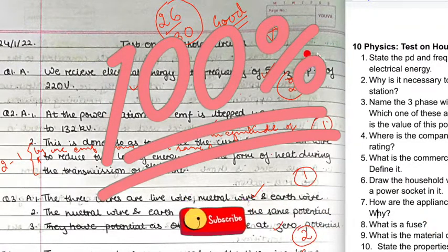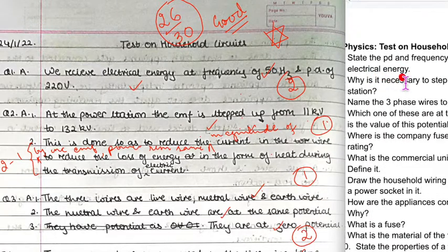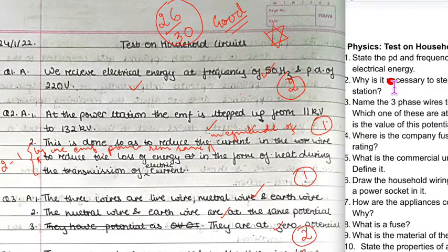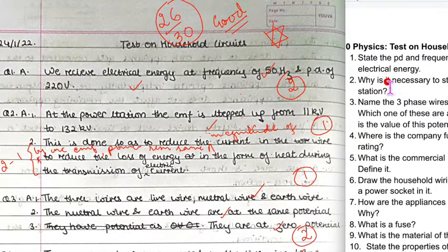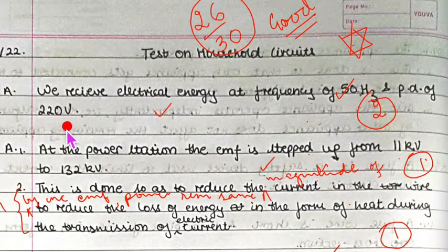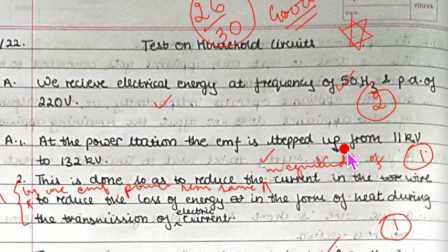Let us look at our first question: State the PD and the frequency at which we receive the electrical energy. We receive the electrical energy at a PD of 220 volts and frequency 50 hertz. That is our two mark question.